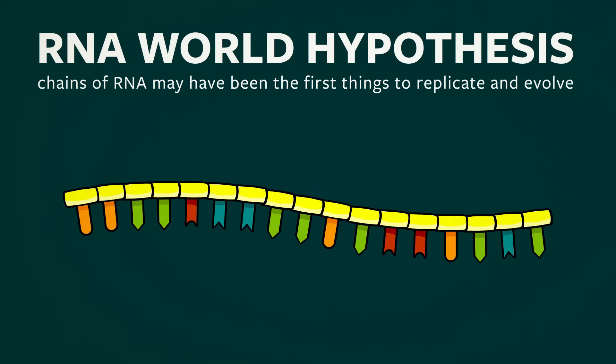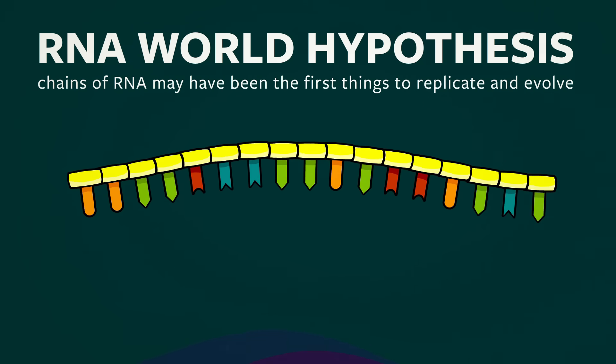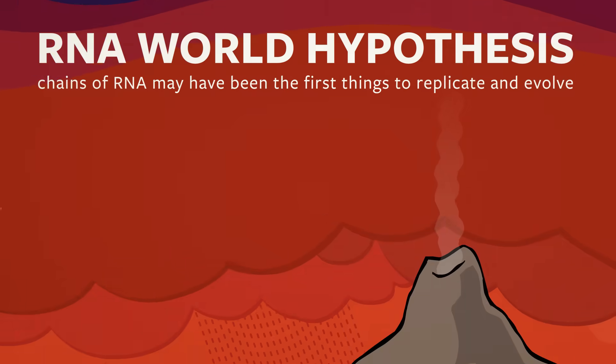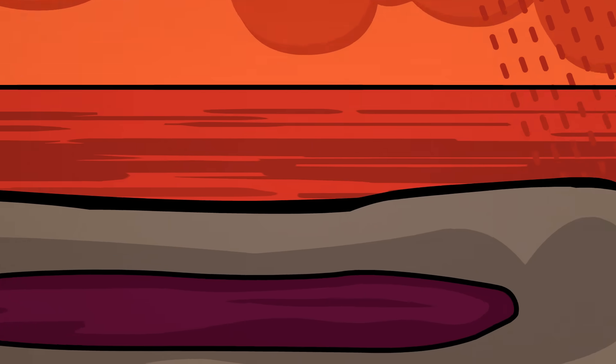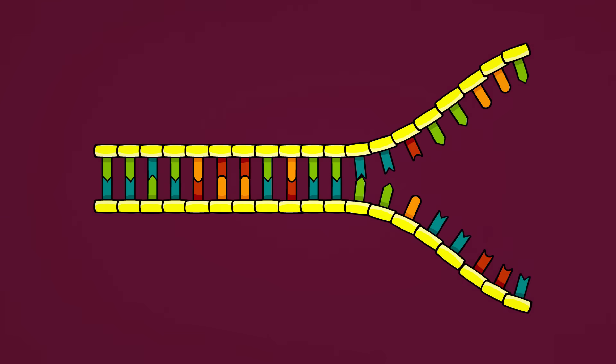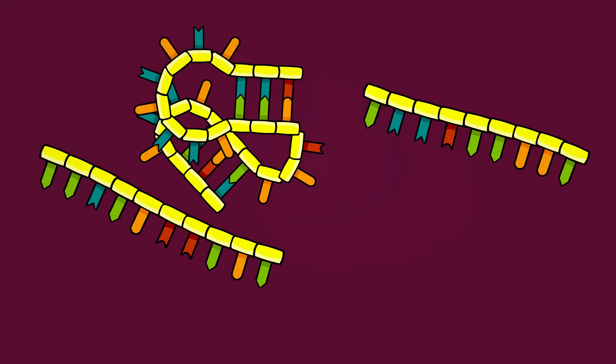While many details have yet to be worked out, the RNA World Hypothesis is the simple idea that somewhere on our early planet, perhaps in a tide pool or hot spring, the Earth's chemistry was producing random chains of RNA. Once formed, they began replicating, evolving, and competing with each other for survival.